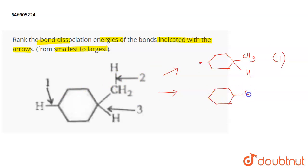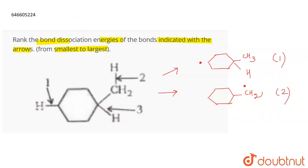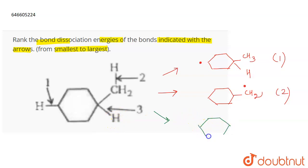When the hydrogen is removed from the second bond, a CH2 free radical is formed. We don't need to draw the hydrogen bonds here. This is the radical formed when the second bond is broken.